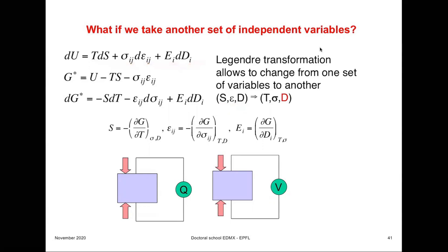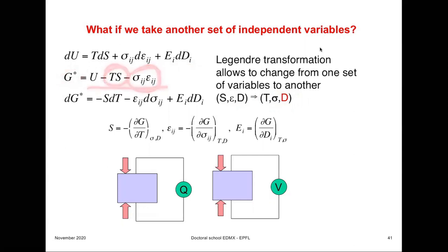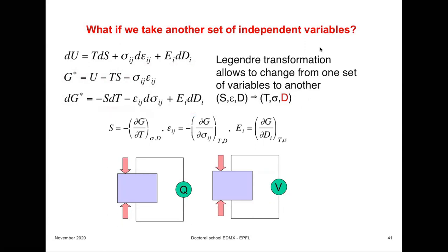We started with entropy, strain, and electric displacement as independent variables. Now we would like to have temperature and stress, but keep the electric displacement instead of the electric field as the independent variable. So we form a new free energy G* by subtracting these two parts — but not the electrical part — and the change of this free energy is given by the resulting relationship.